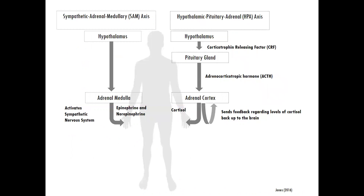This is the sympathetic adrenal medullary axis and the hypothalamic pituitary adrenal axis that we'll be talking more about in class. We'll be talking about the way in which messages are sent to the adrenal medulla and adrenal cortex, which sit just above the kidneys, and which release epinephrine, norepinephrine, and cortisol.